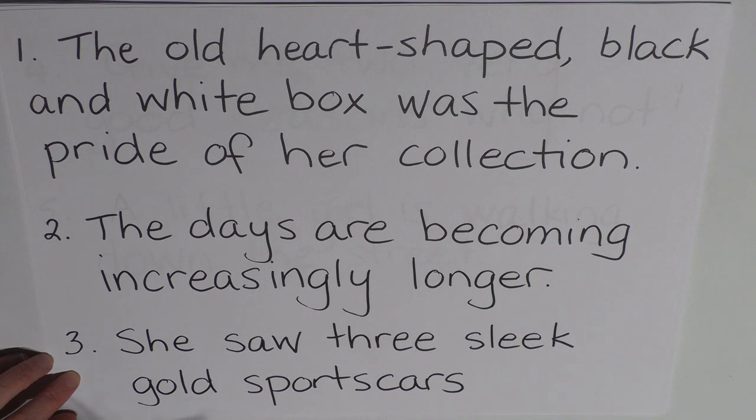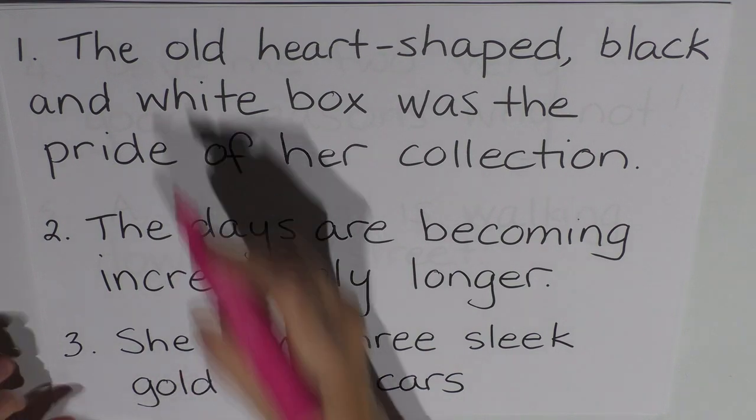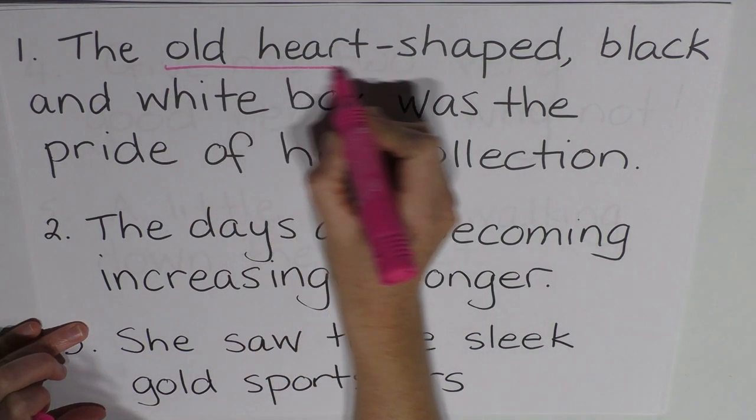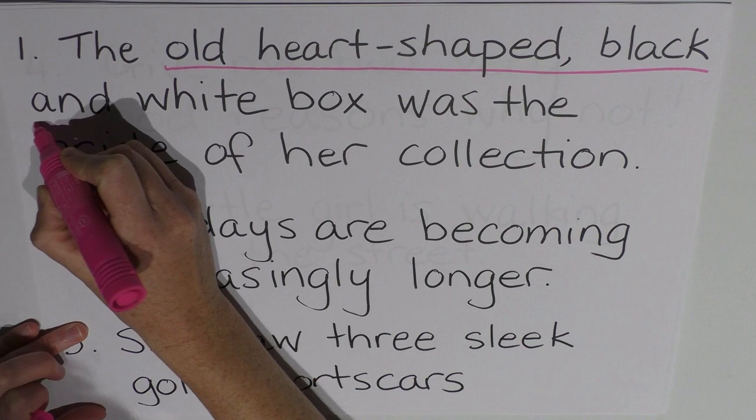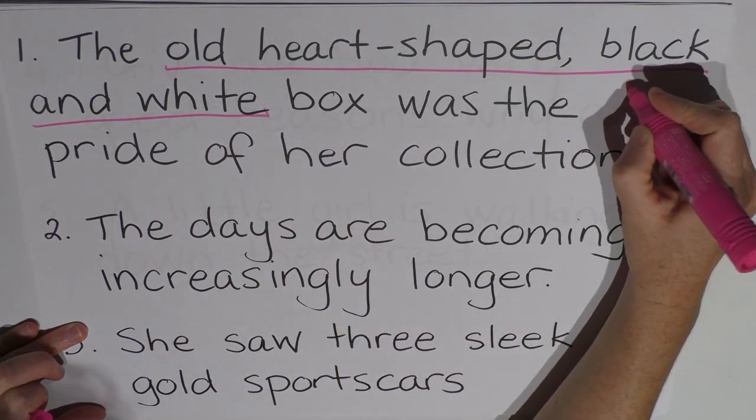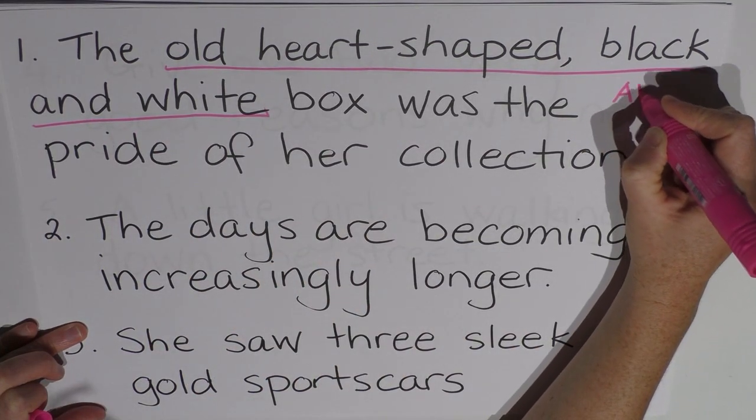So let's have a look at the first one. Our adjective phrase in this sentence is old, heart-shaped, black and white. Let's underline that, old, heart-shaped, black and white. So that's our adjective phrase, so AP for adjective phrase.